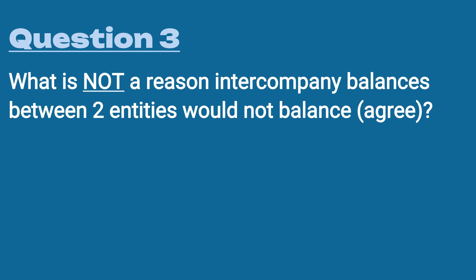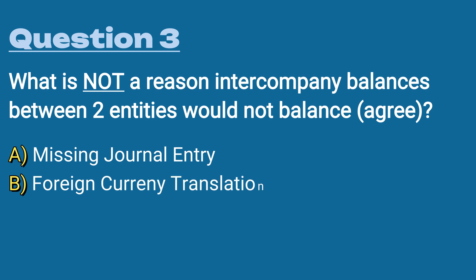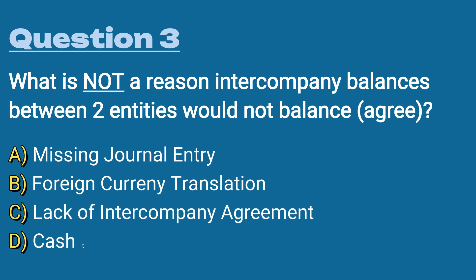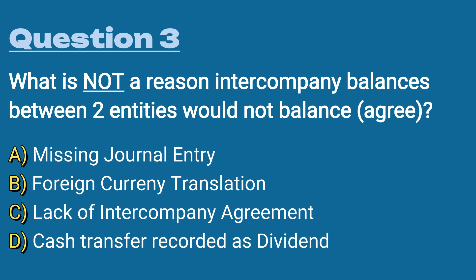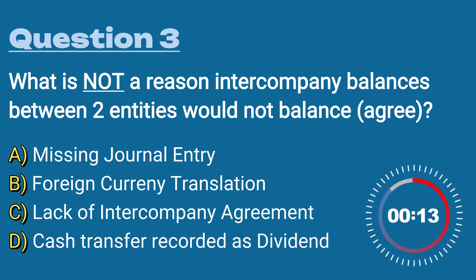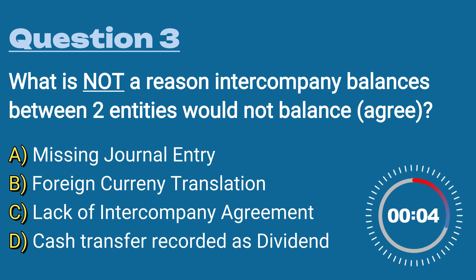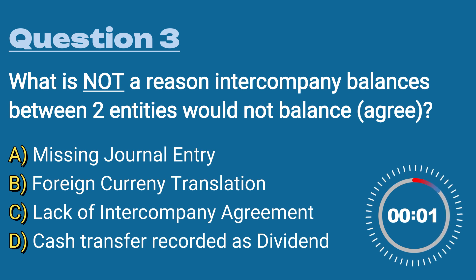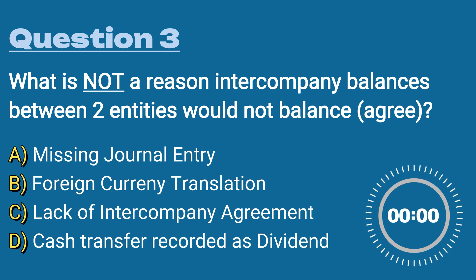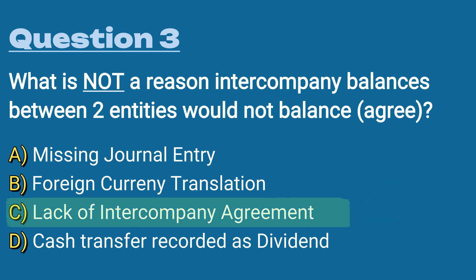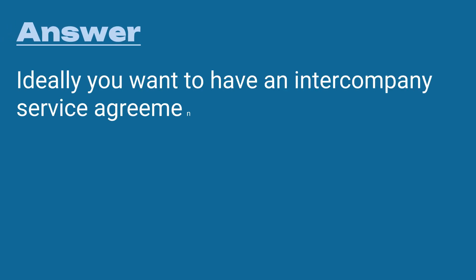Question number three: what is NOT a reason intercompany balances between two entities would not balance? A) a missing journal entry, B) a foreign currency translation, C) a lack of intercompany agreement, or D) a cash transfer was recorded as a dividend. The answer is C) lack of intercompany agreement.